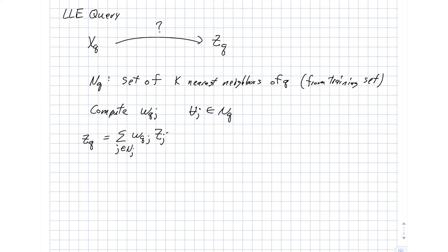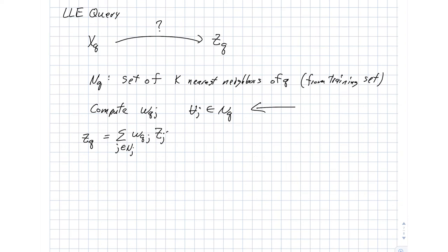So the only optimization step in this whole process is this one right here where we're computing our Ws. Once we have those Ws, we already know those and we already know what our ZJs are, and so it's a very quick step to compute this ZQ.